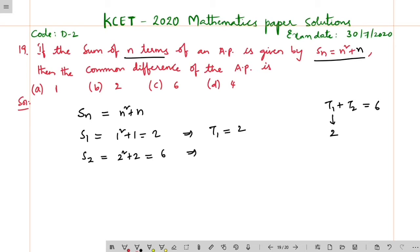Term 1 is 2, then what is term 2? Term 2 equals 6 minus 2, or we can use S2 minus S1. Sum of two terms minus sum of one term, that is 6 minus 2, which is 4.